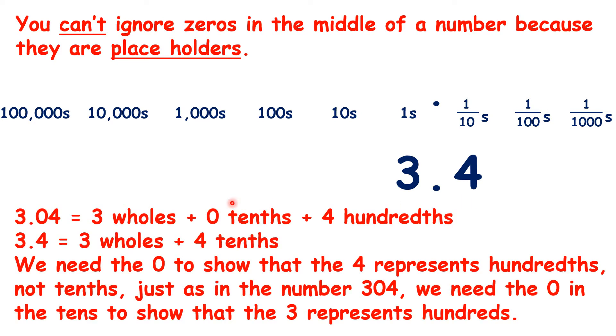But 3.4 is not the same as 3.04. 3.04 tells us that we have 3 wholes, no tenths, and 4 hundredths. But 3.4 tells us that we have 3 wholes and 4 tenths.